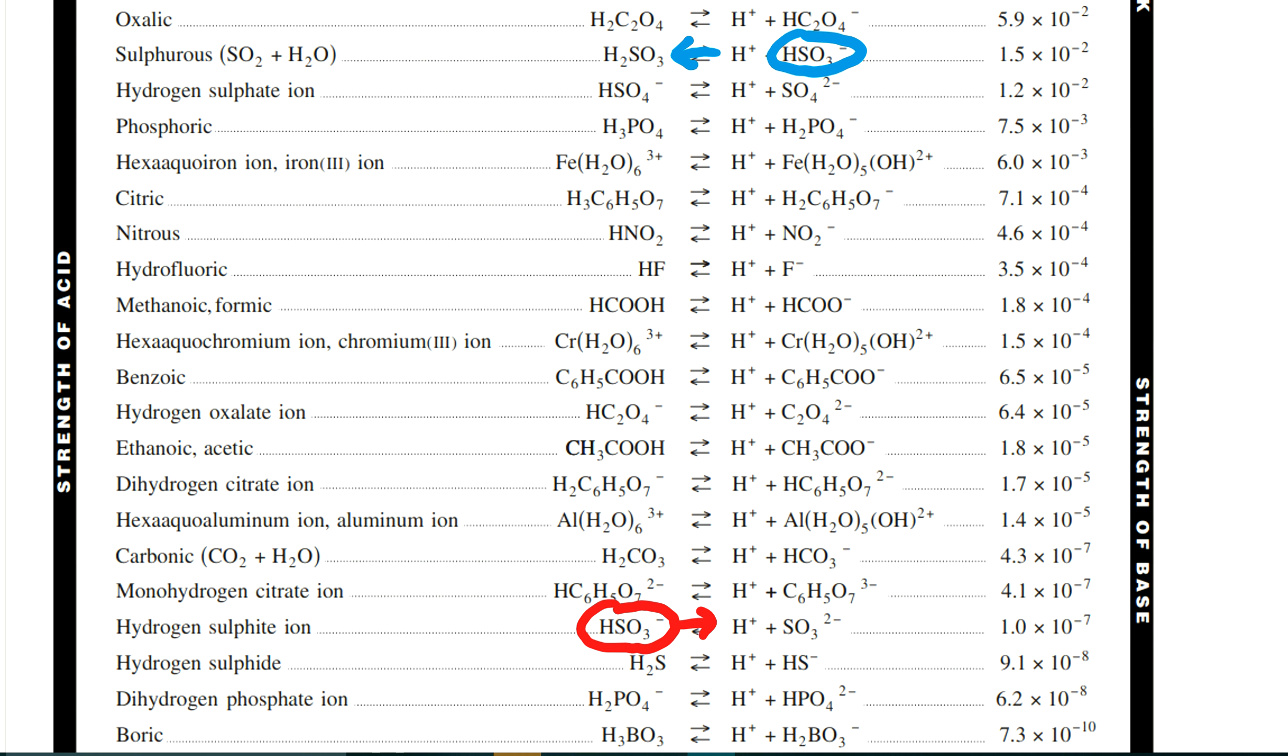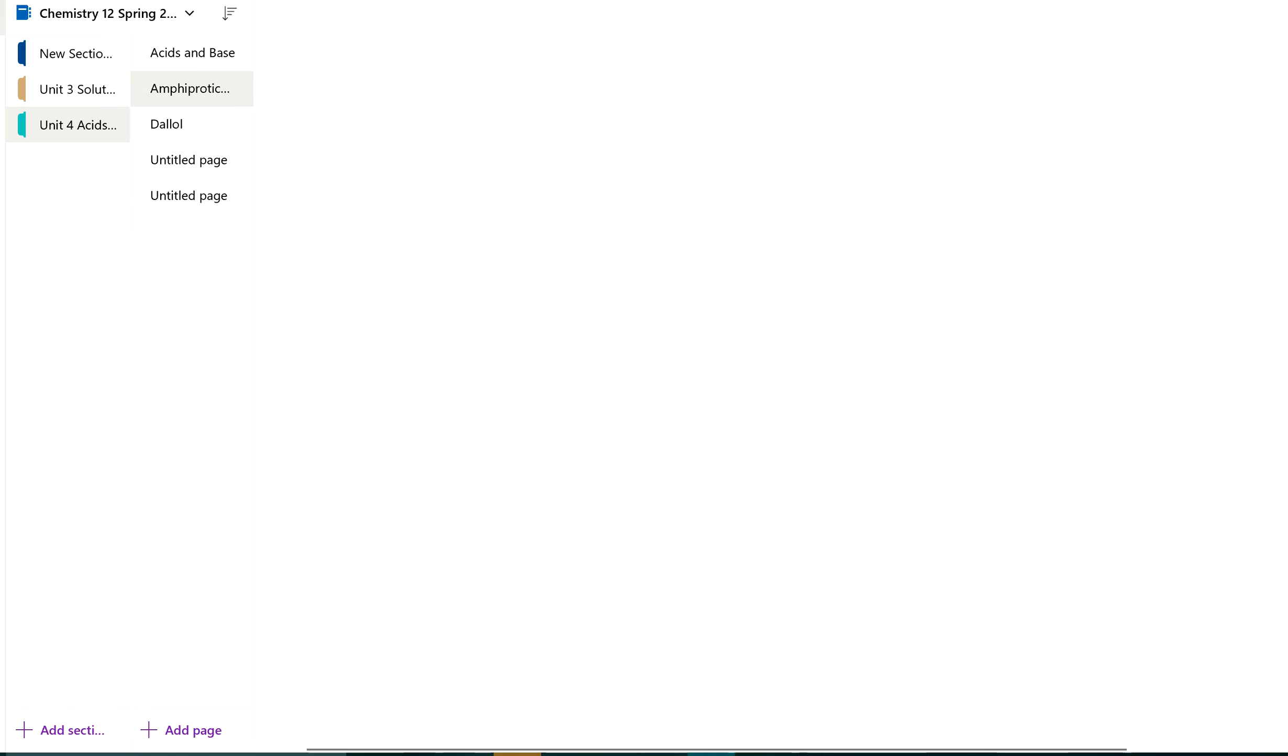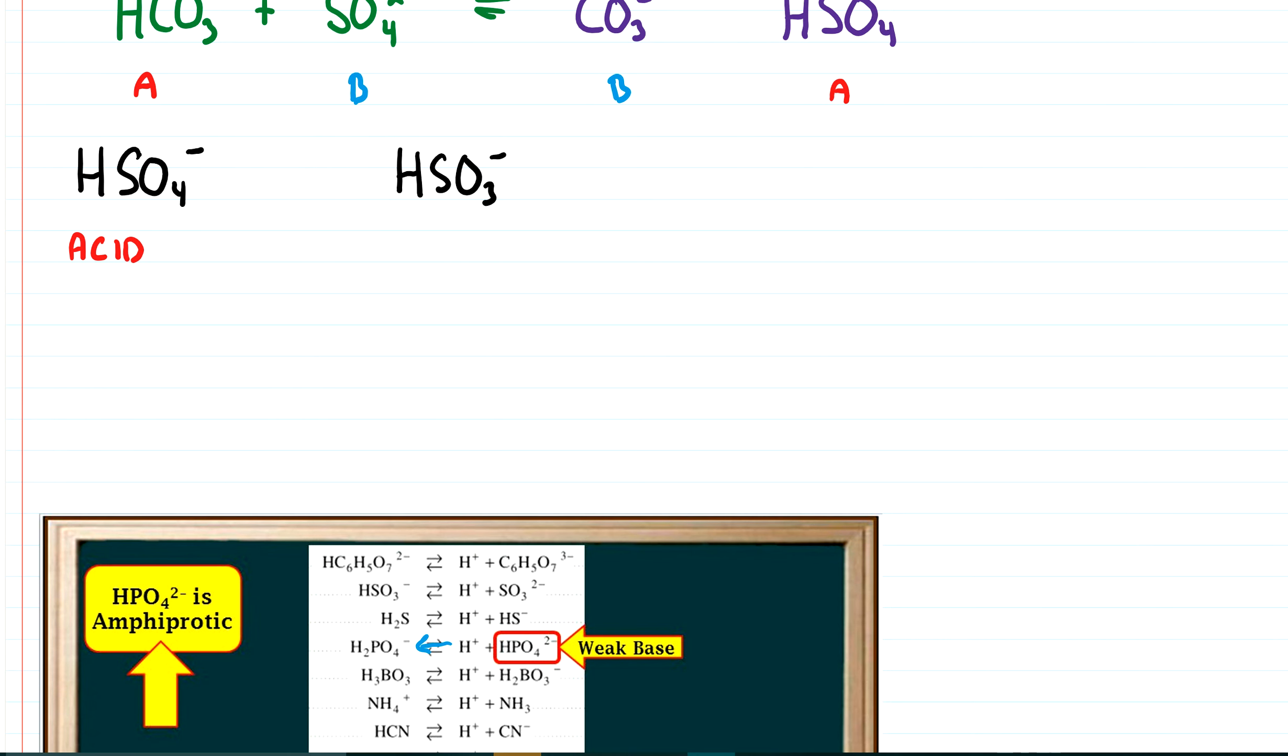So the compound HSO3- has acidic properties and basic properties, so it can act as both. So if I go back to my earlier notes here, then we would say that this compound is amphiprotic. Remember our rules up above. We said that in order to be amphiprotic, you had to have an H, and you need to have a negative charge maybe to take that.